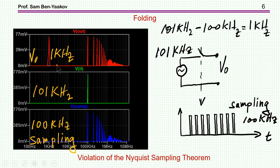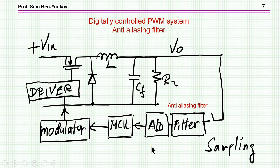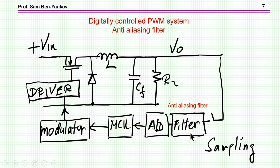This is very well known, and it's a problem in digital controlled PWM systems where we sample the output with an A-to-D converter, pass it through a compensator, and then a modulator driver. In order to avoid the problem of folding, we need an anti-aliasing filter to eliminate high frequency components so that after sampling we do not get low-frequency folding.